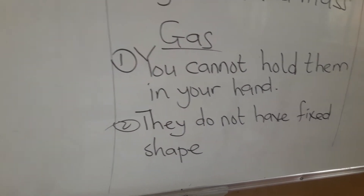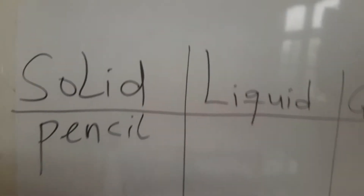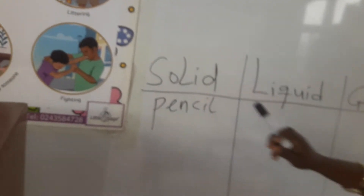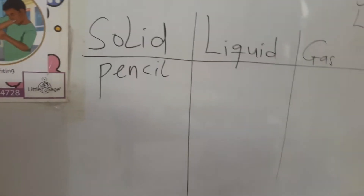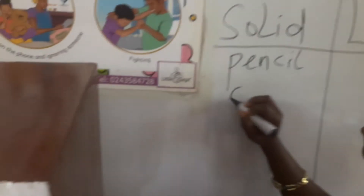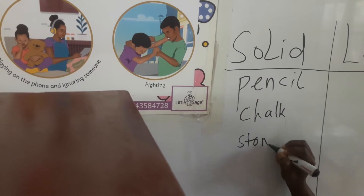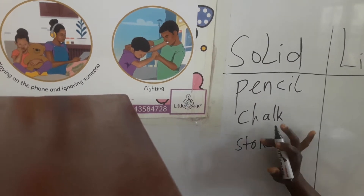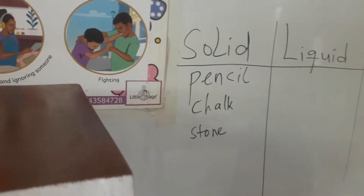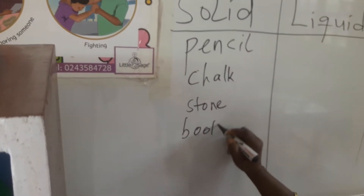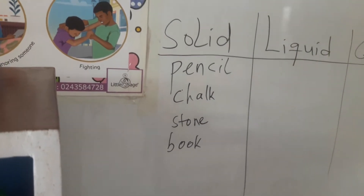So let's group our materials into solid, liquid, and gas. For solid we have: pencil, chalk, stone, and book.